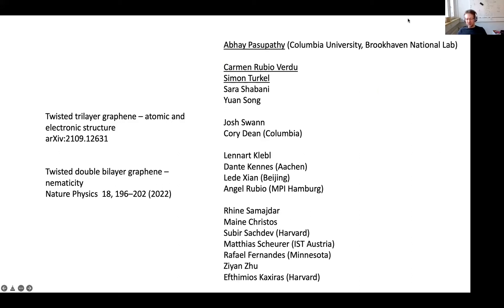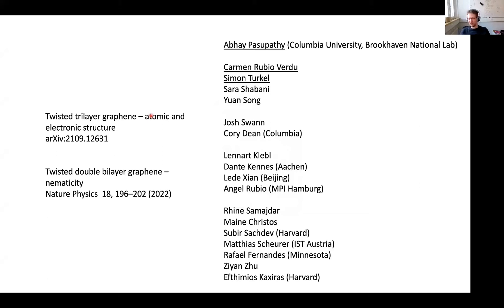Let me briefly introduce our speaker today, Abhai Pasupati. He got his PhD from the group of Dan Ralf at Cornell in 2004 studying electron transport in molecular transistors. After that, he joined the group of Alias Dhani at Princeton for a postdoctoral fellowship from 2004 to 2008. Since 2009, Abhai Pasupati has been a professor of physics at Columbia University, and since 2019 also a group leader in the Condensed Matter Physics and Material Science Department at Brookhaven National Lab.